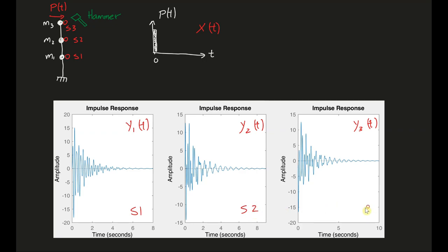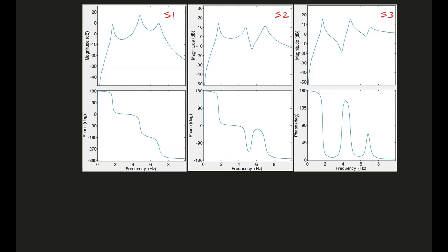The third floor structure experiences a hammer blow, all sensors start recording, and I have the recordings from the first, second, and third floors. I take my inputs and outputs, convert them to frequency domain, and perform frequency response function analysis. I've taken my results and converted them to frequency domain, giving me FRFs: H_y1x, H_y2x, and H_y3x, where x is my input.